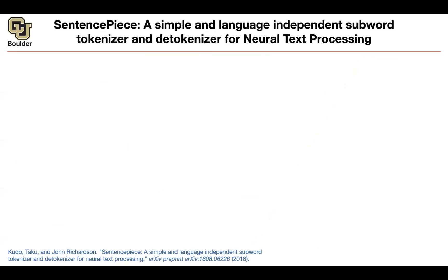Last session we learned about byte-pair encoding, which is really important — it allows you to work with open vocabulary, new words, and out-of-dictionary words. We also compared it to two other similar methods: byte-level BPE, which uses Unicode characters instead of corpus-extracted characters, and the WordPiece model, which uses a different strategy to merge subwords together.